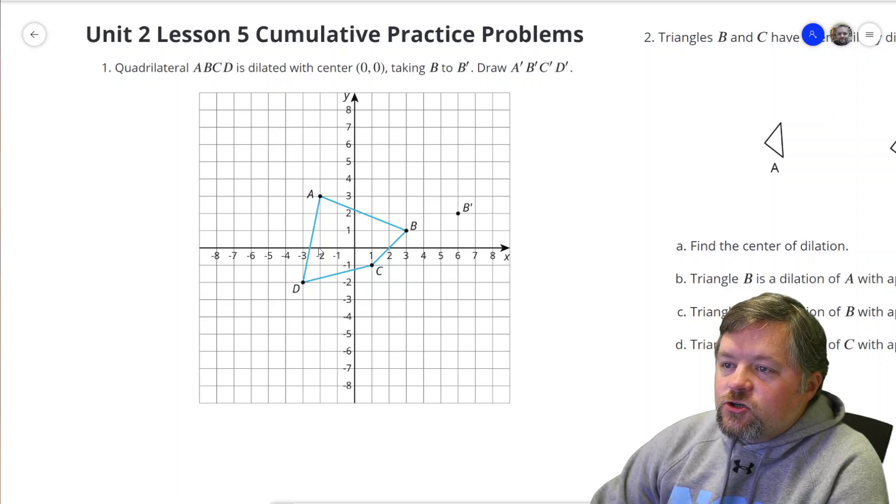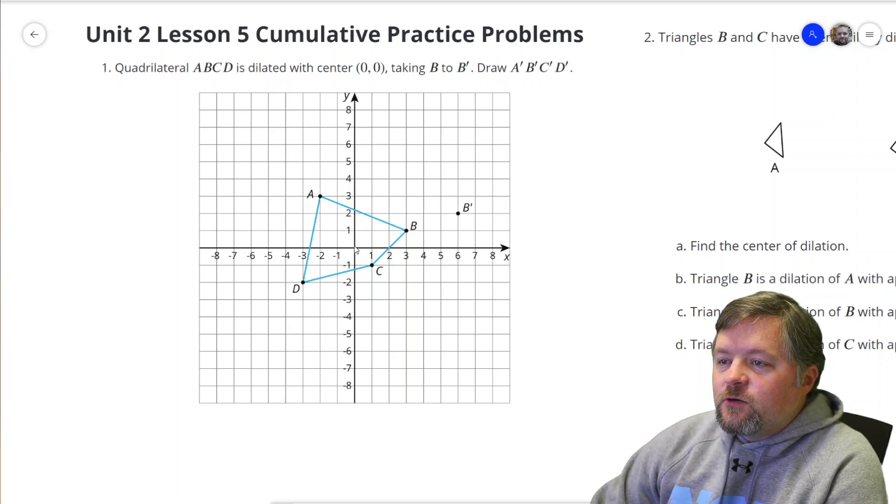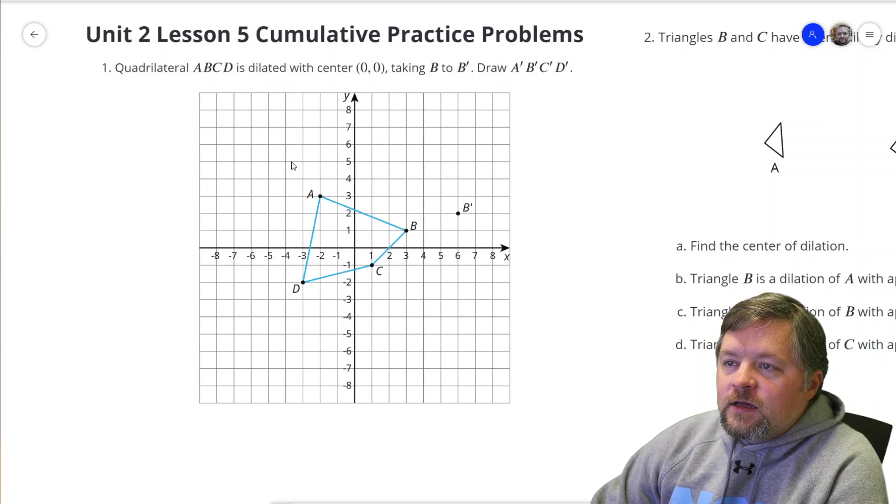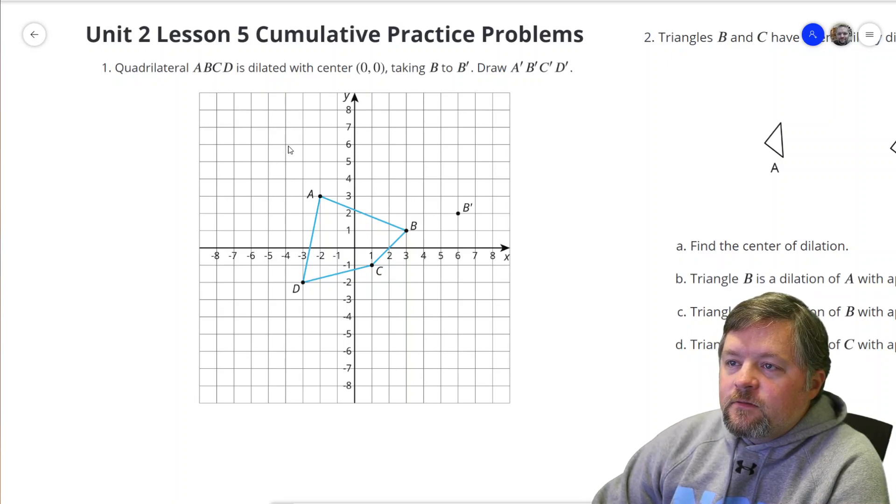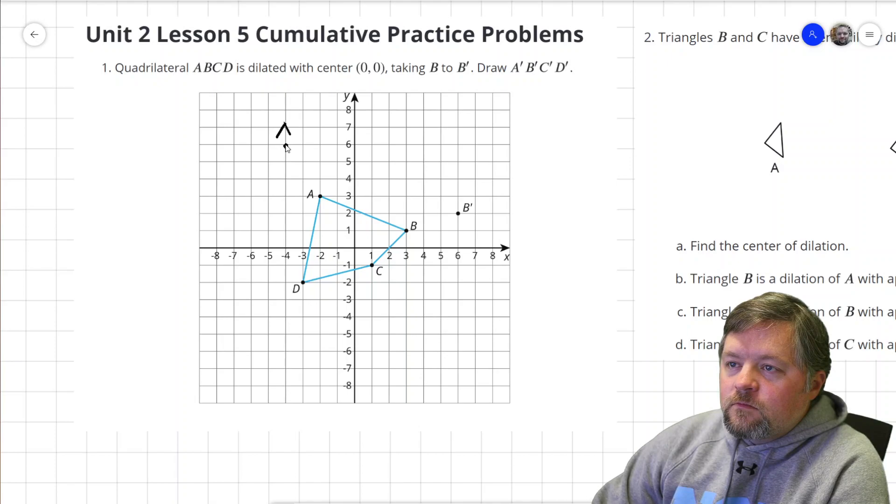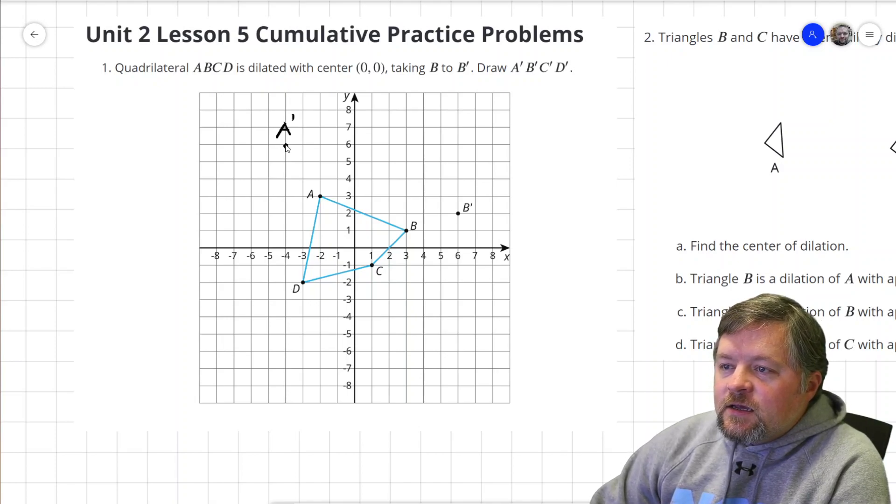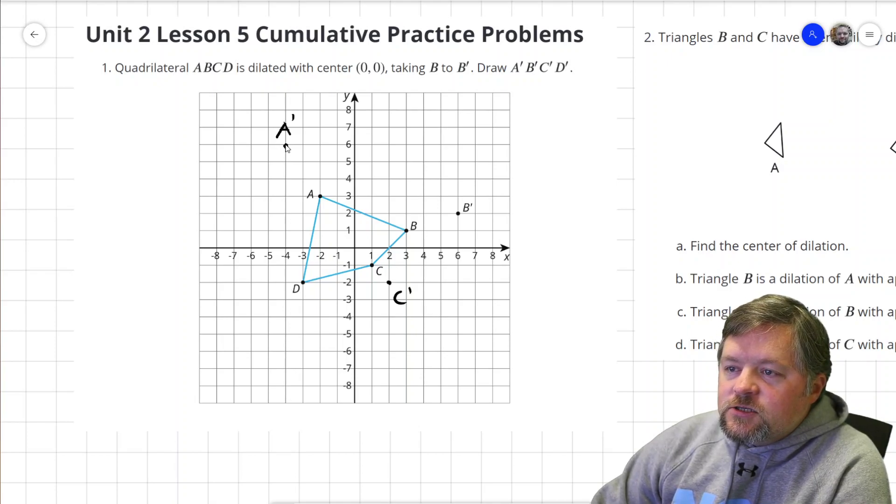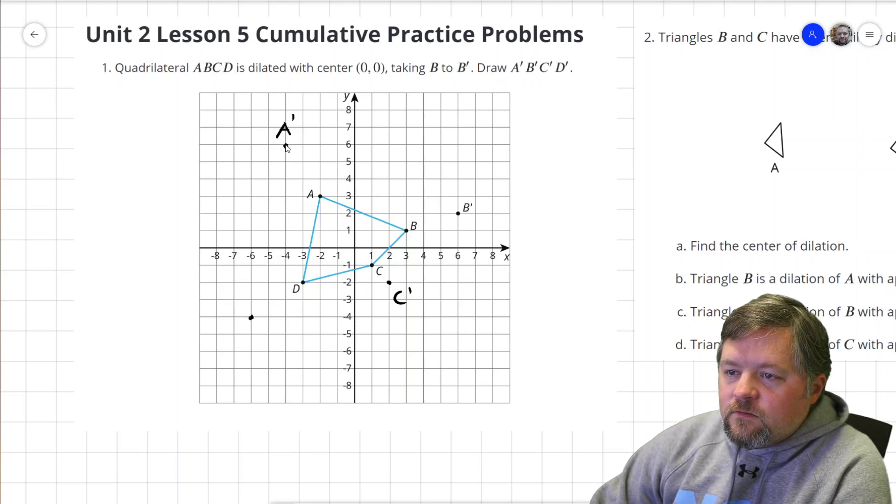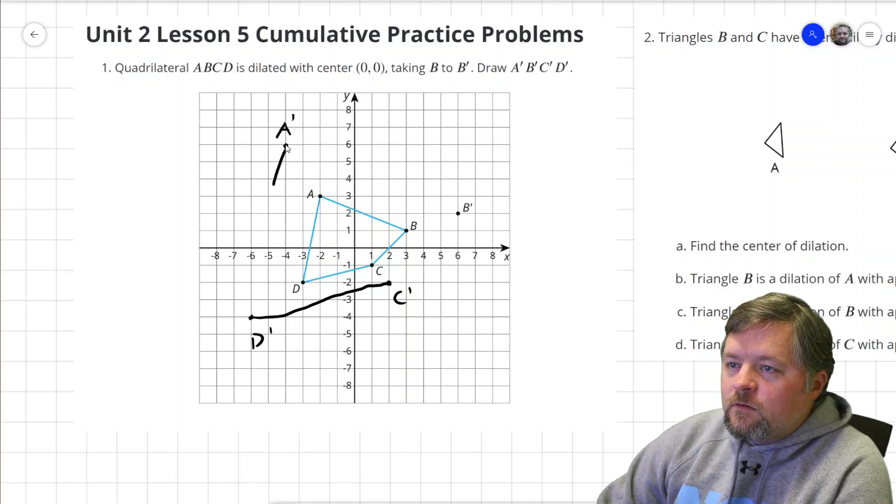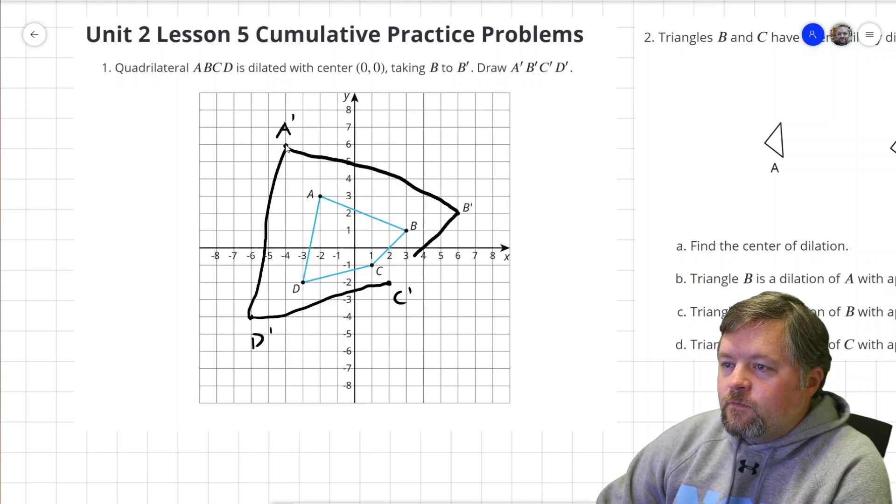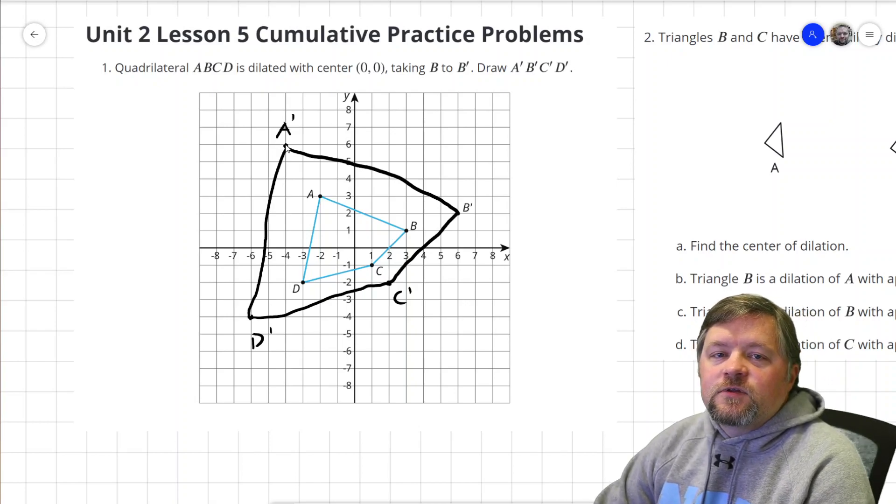A is 2 over and 3 up, so we have to double both of those, so 4 over and 6 up. C is (1,1), double it, that will be (2,2). D is 3 over, 2 down, so we're going to go 6 over and 4 down. Beautiful. Dilated with a scale factor of 2.